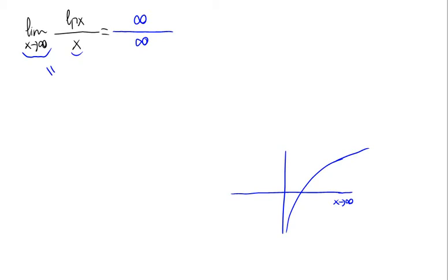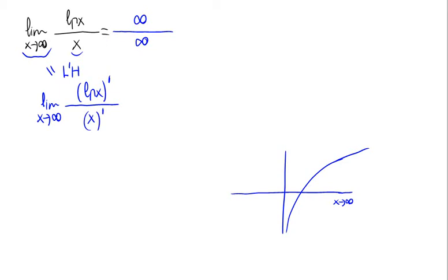Then we are going to apply L'Hôpital's rule, so we obtain that this is the limit when x approaches to infinity of the derivative of ln(x) divided by the derivative of x. The derivative of the natural logarithm of x is 1 divided by x, and the derivative of x is 1.